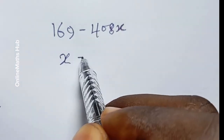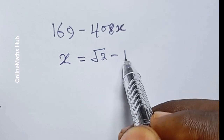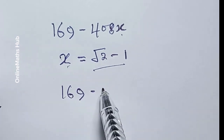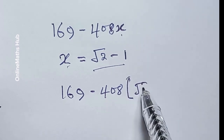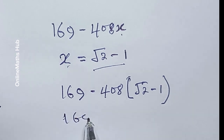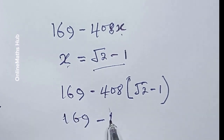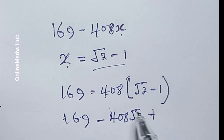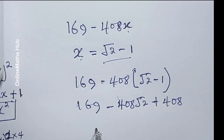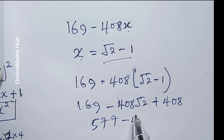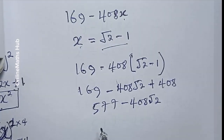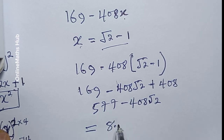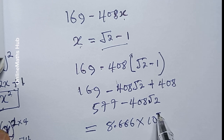Remember we set x equal to √2 minus 1. Replacing x: we get 169 minus 408 times (√2 minus 1), which expands to 169 minus 408√2 plus 408. Adding the constants: 169 plus 408 is 577, so the answer is 577 minus 408√2. If you compute this on a calculator you get approximately 8.666 times 10 to the power minus 4.